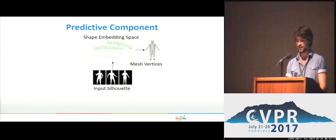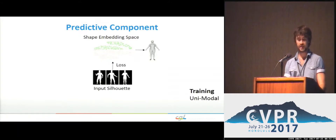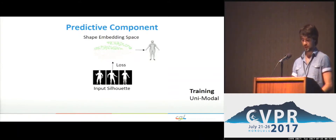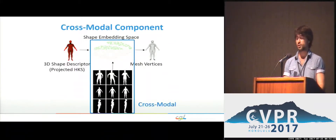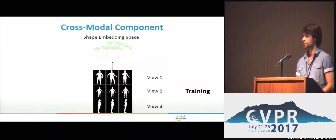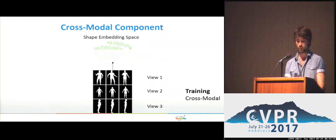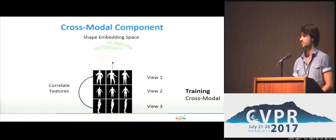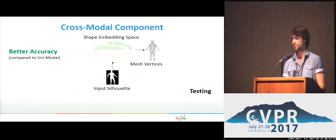The second component finds a mapping from 2D silhouettes to 3D body shape vertices, with a loss on the newly learned embedding space during training and a forward pass through it to estimate mesh vertices directly. This achieves good accuracy already. The cross-model component leverages multi-view information at training time by pre-training for each single view and then combining all views together through correlating features in fully connected layers and minimizing the combined loss. This boosts predictions coming from a single view at test time as compared to training in the unimodal case.